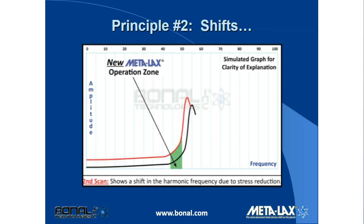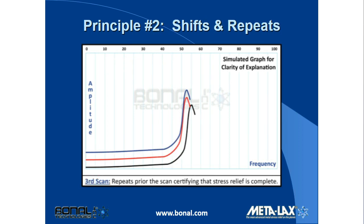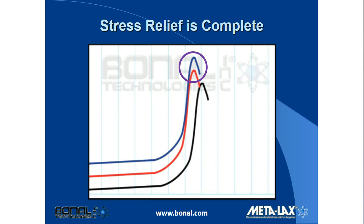Principle number two is the shifting principle. After the initial vibration time dwell, another scan is taken to see if the curve has shifted. If the curve has shifted, it indicates that some stress relief has occurred. Vibration will then be applied for a second time period, usually five to ten minutes, in the new subharmonic zone. A third scan is then taken. If the third scan is in the same location as the second one, then stress relief is complete. If not, you vibrate for another five minutes until the last two scans repeat. This certifies stress relief is complete.